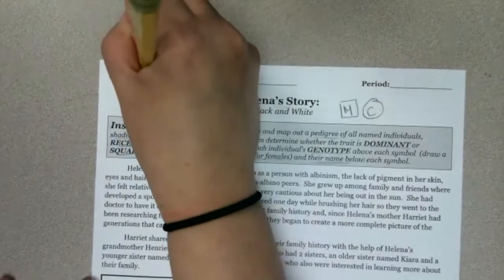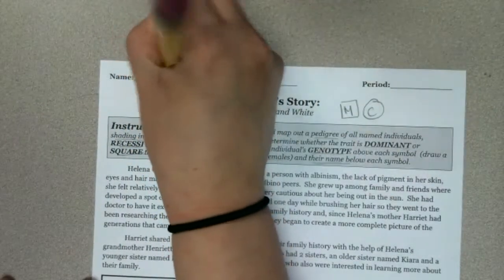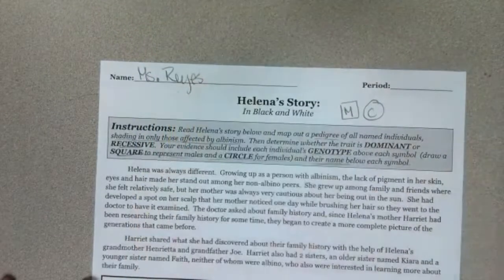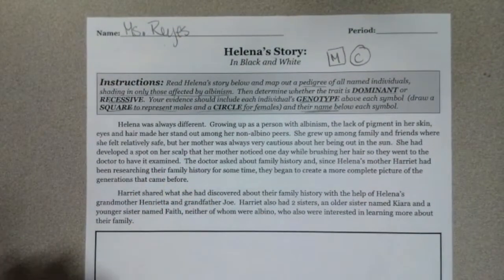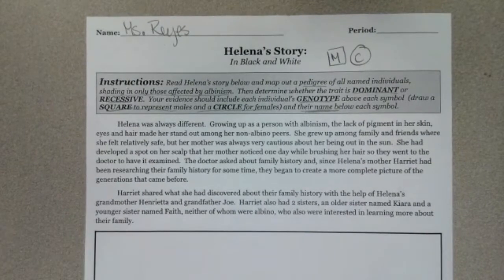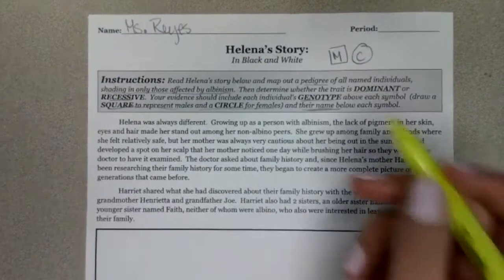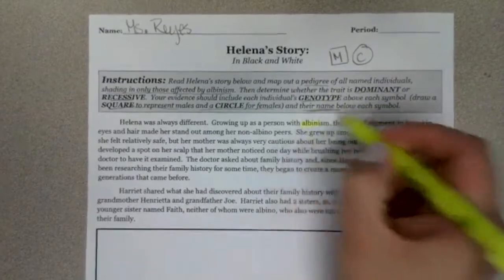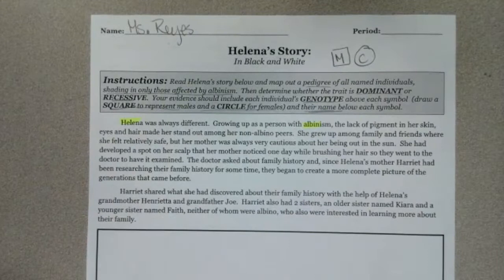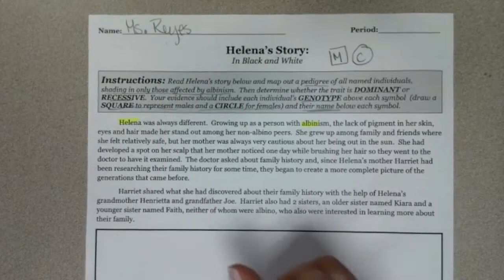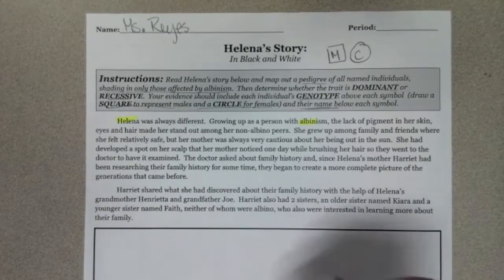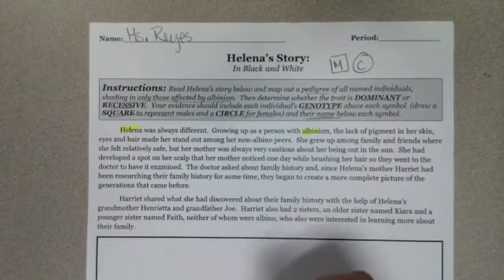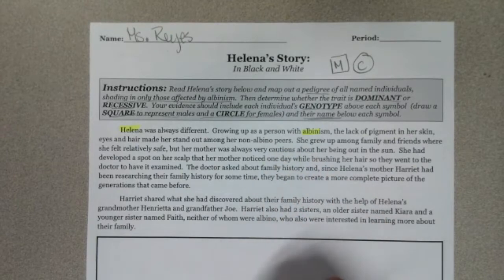Make sure you get your name on there because I cannot give you a grade if I don't know who did the work. So let's start reading. Helena was always different growing up as a person with albinism — so Helena has albinism. We're going to start with Helena down here. She's a female, so she gets a circle, and we also need to write her name.